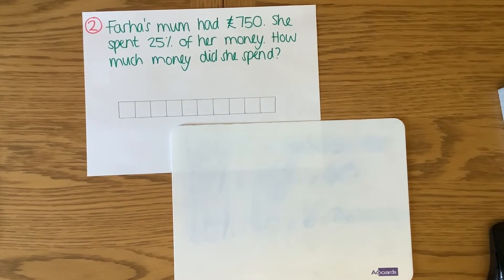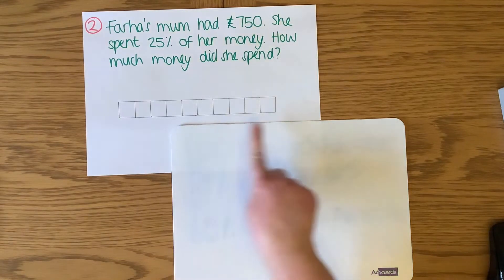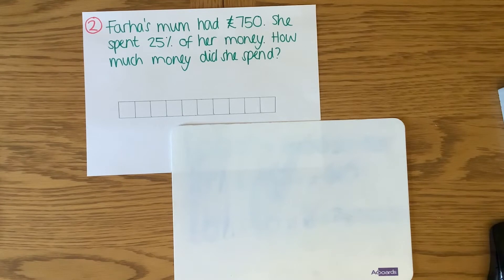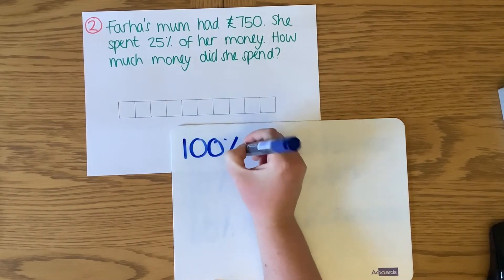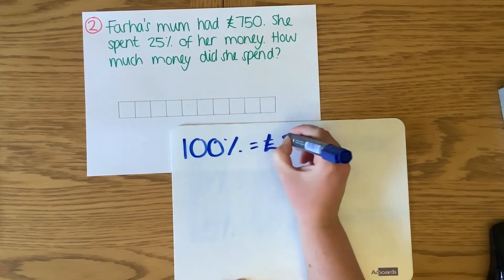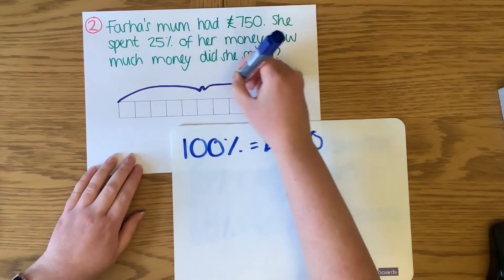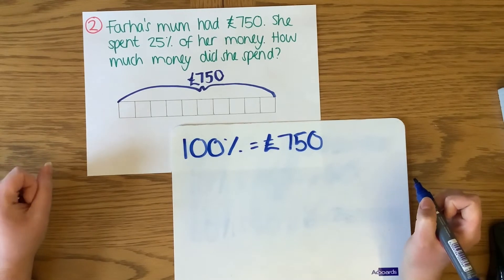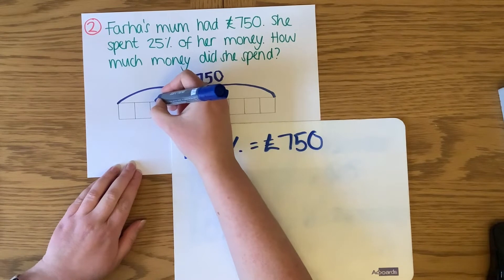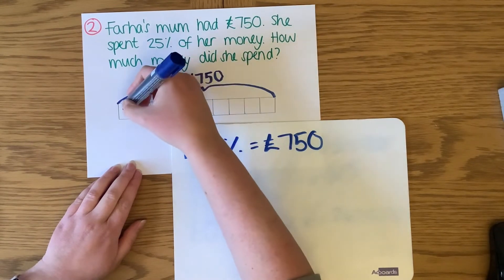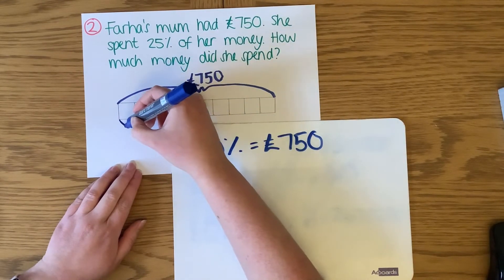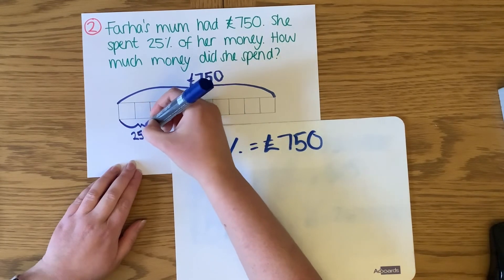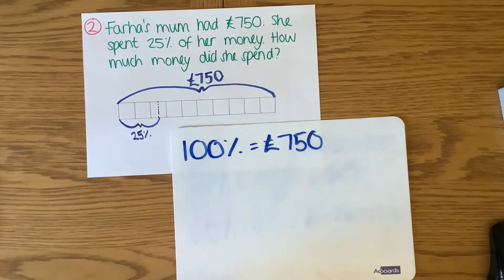Now let's look at another question together. Farrah's mum had £750. She spent 25% of her money. How much money did she spend? Once again I've got my bar model split into 10 pieces. My whole is my 100%, which is the amount of money she had — £750. I can pop that onto the bar model. We're told she spent 25%, so I'll show that on the bar model — about halfway between the 20 and 30 marks, because 25 is in the middle there. So I now need to work out what 25% of £750 is.